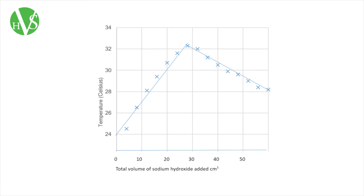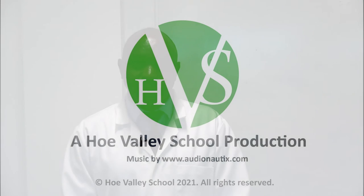This is shown by the graph — you can then draw two lines of best fit to represent the information. I hope you enjoyed this investigation. This practical is part of our required practicals for GCSE. If you want to find out more, please look at our website: tiny.cc/hvsrequiredpracticals. Thank you.